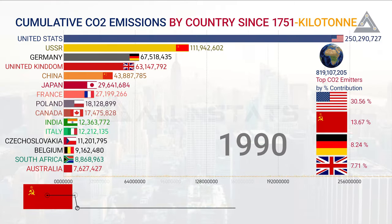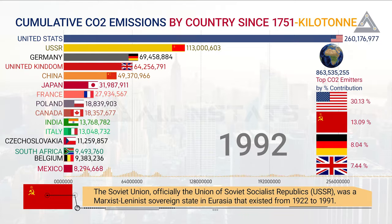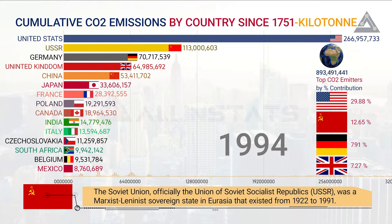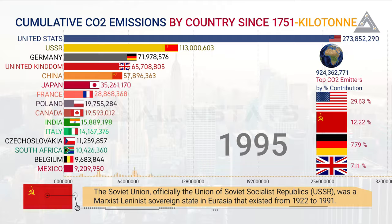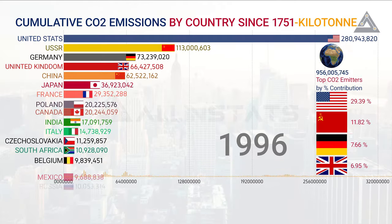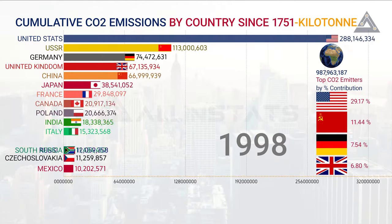The USSR was a Marxist-Leninist sovereign state in Eurasia that existed from 1922 to 1991, and hence the USSR graph is stable from here.